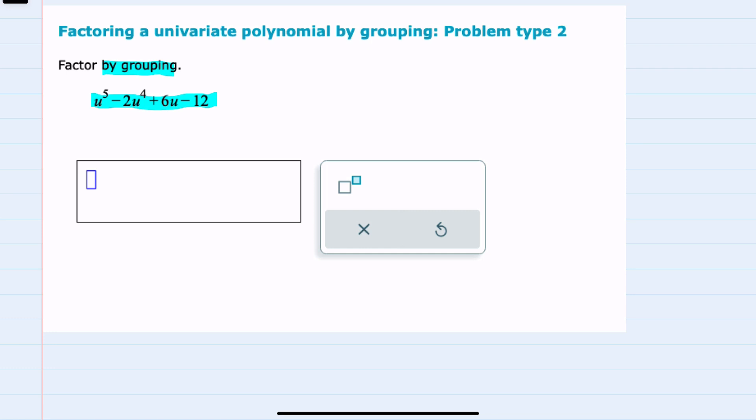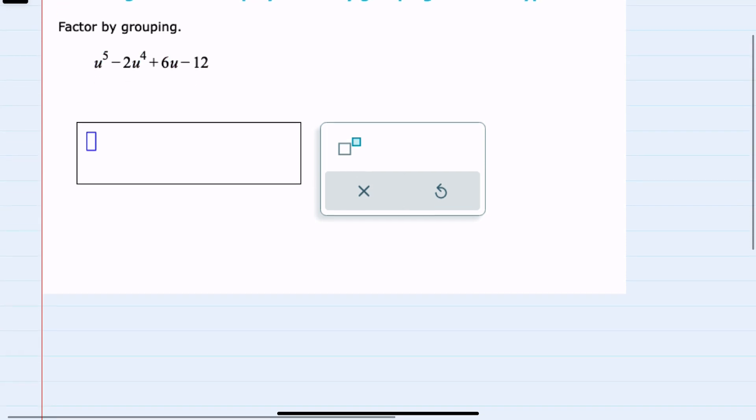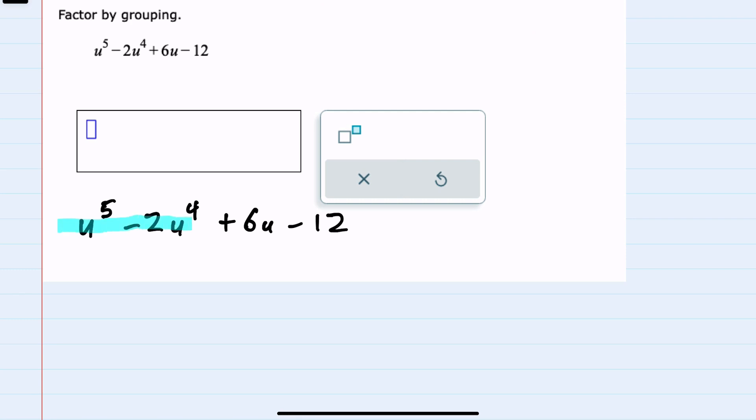Since I have four terms in this expression, my grouping is going to put the first two together and then the second two together. I'll start by rewriting this, and looking first at these first two terms.